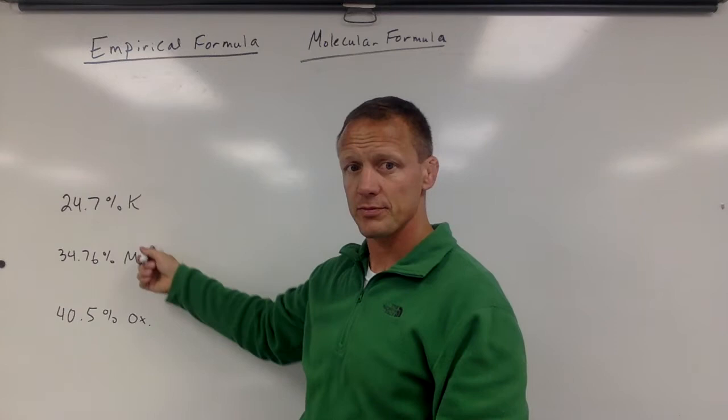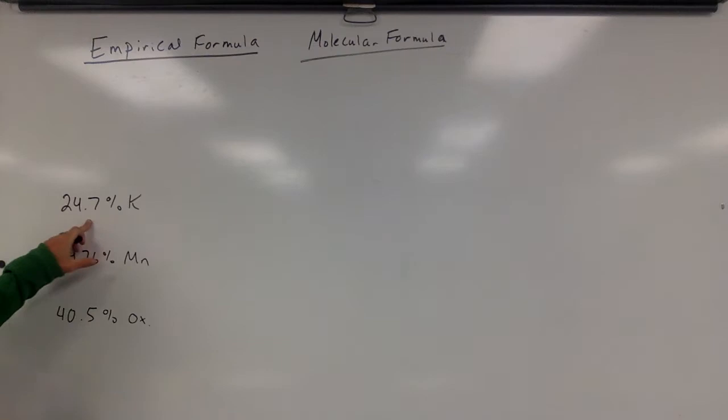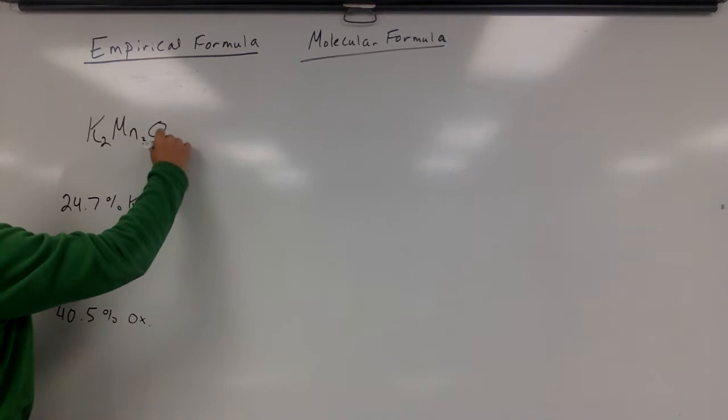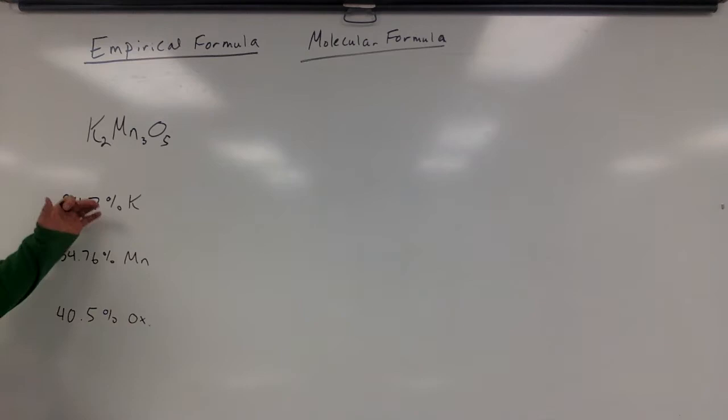So now I'm going to give you some percent values and you've got to figure out the formula. For example, we know this compound is 24.7% potassium, this percent manganese, this percent oxygen. We want to know what the formula is like. Is the formula K2Mn3O5? That is not the right formula, but we're trying to figure out what the formula would be based on these percents.